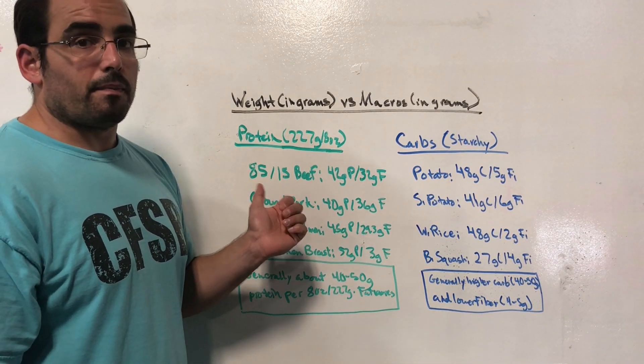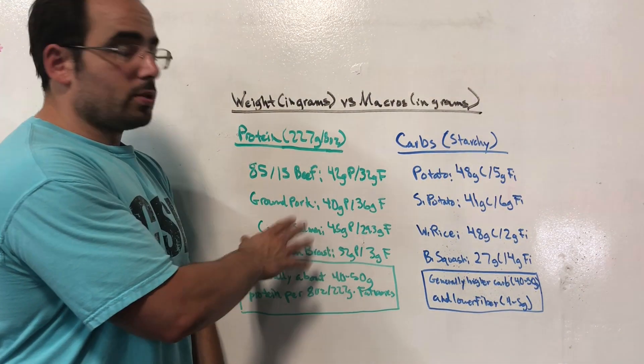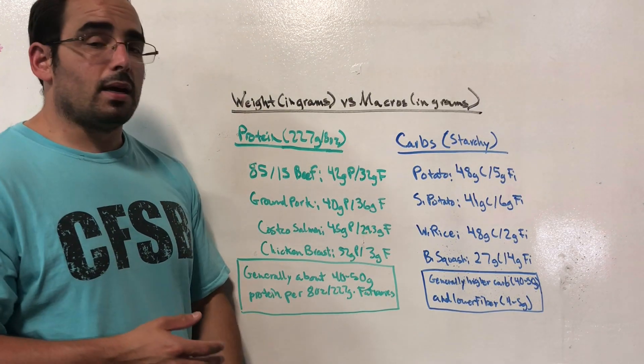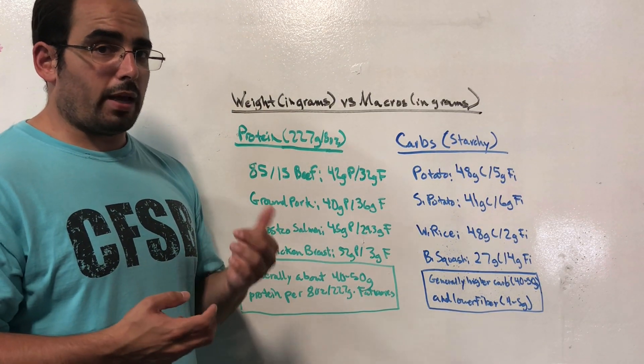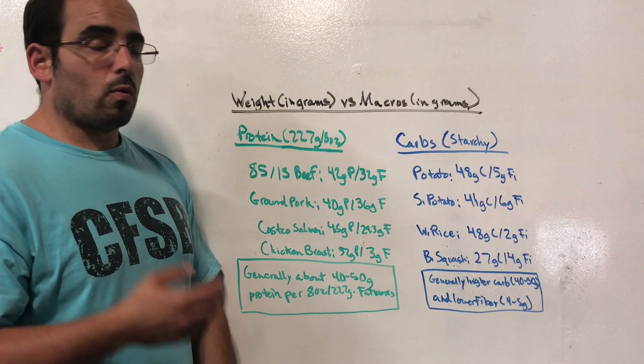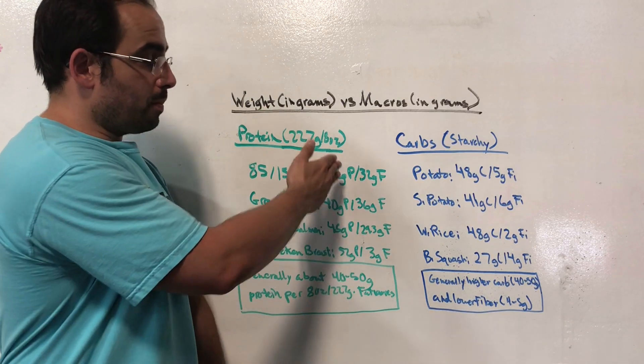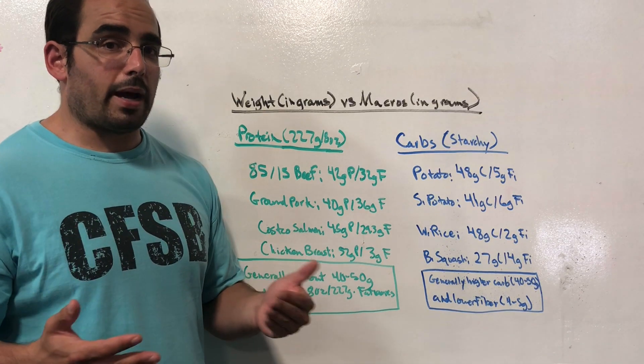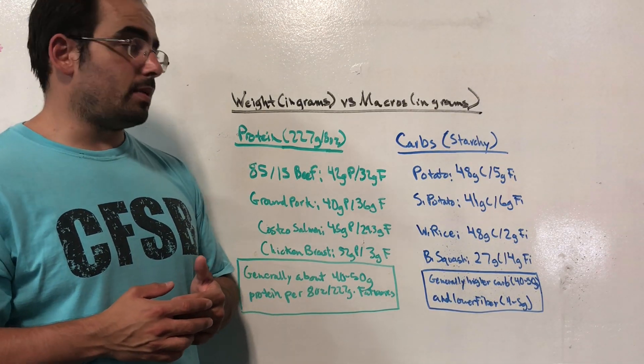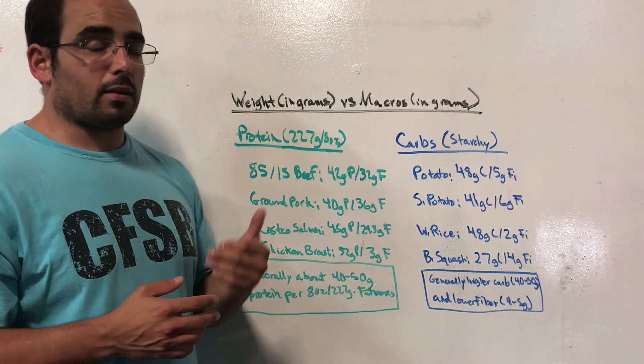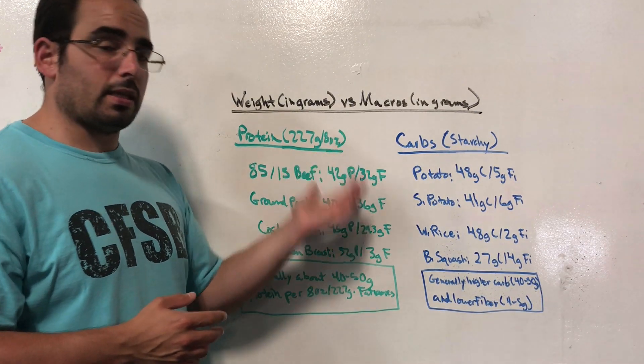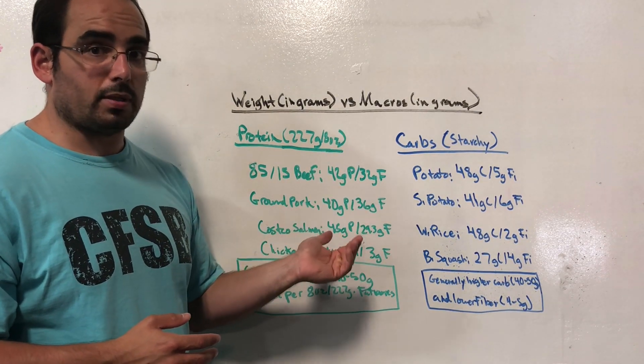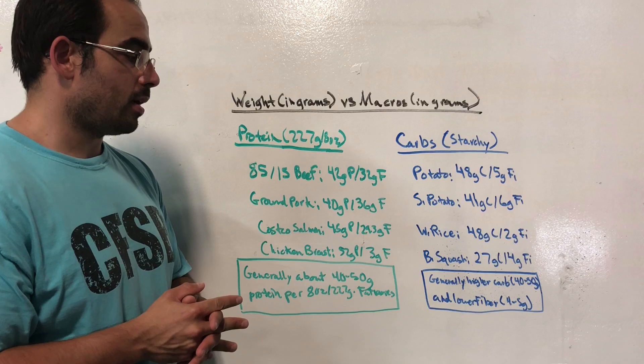Now, an important point to make before we hop over to chicken breast is that as you can see, pretty much any form of animal protein that you're going to get when you're counting your macros is not just going to be protein, but it's also going to be a decent amount of fat. So when calculating your macros, it's not just going to be the fats that you get from oils, but also the fat that you get from the animal protein that you may or may not be having as part of your way of eating.